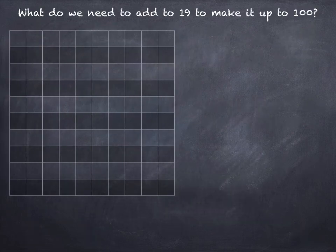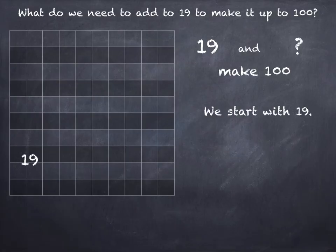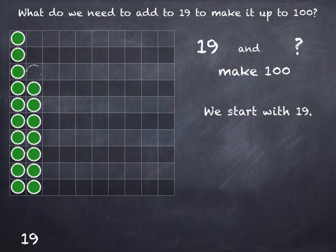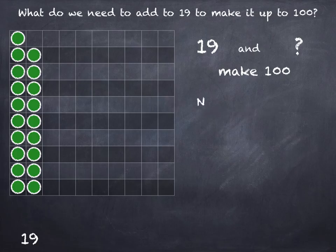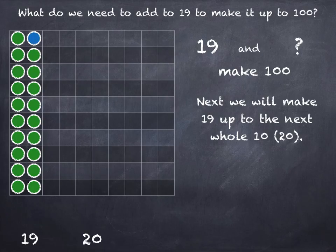What do we need to add to 19 to make it up to 100? 19 and what is 100? So 19 is 1 ten and 9 units. And now we'll make 19 up to the next whole 10, which is 20. So what do we have to add on to 19 to get to 20? Use your number bonds to 10 — 9 and what make 10? So 19 plus 1 will take us to 20.